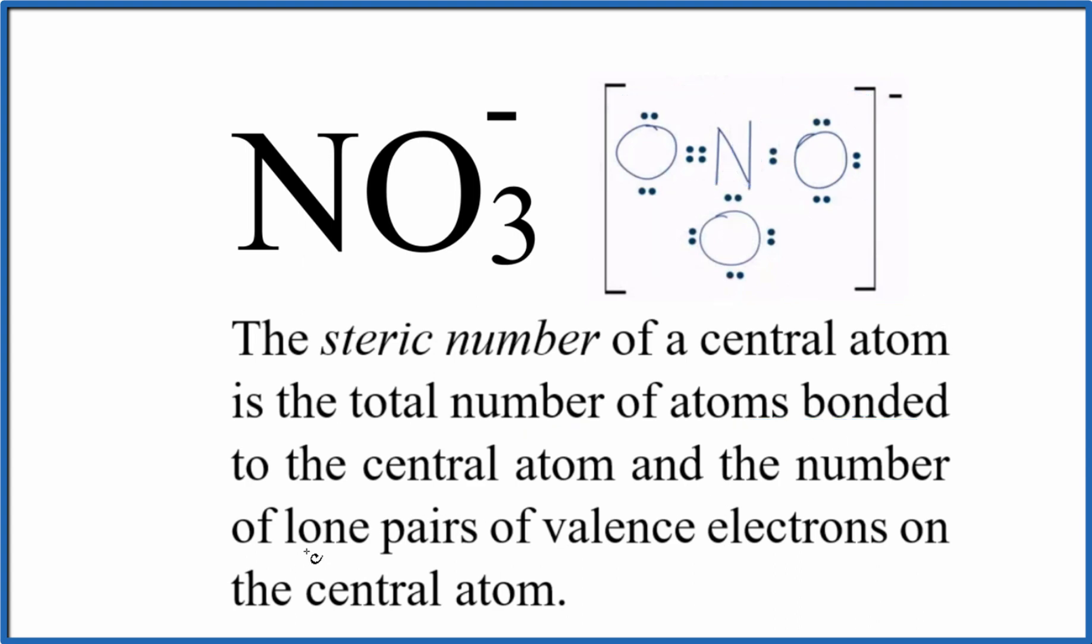Then we want to look at the number of lone pairs on the nitrogen. All of these electrons right here are involved in chemical bonds. These are all bonding pairs of electrons. We don't have any lone pairs here on the central atom in the nitrate ion.